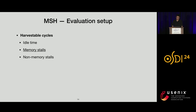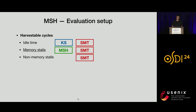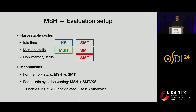For evaluation, harvestable cycles can be classified into three classes: idle time at low loads, memory stalls which are MSH's focus, and non-memory stalls such as front-end stalls or compute-bound stalls. MSH is specifically designed to handle only memory stalls. Kernel scheduling can harvest idle time, while SMT can harvest all three types. When comparing only memory stalls, we compare MSH versus SMT directly. For a holistic comparison, we combine MSH with either SMT or kernel scheduling to also harvest the other cycle types, enabling SMT if the SLO is not violated and using kernel scheduling otherwise.